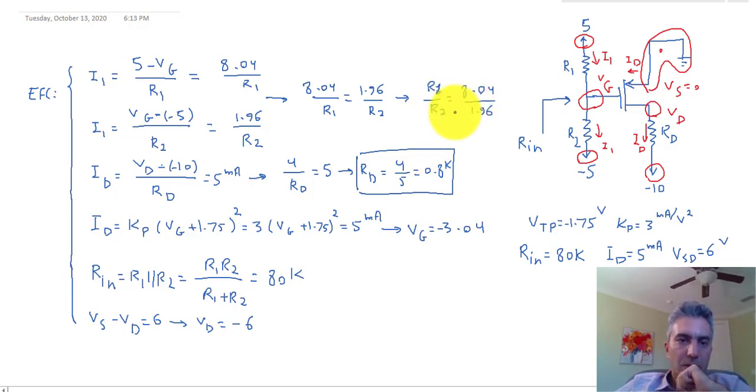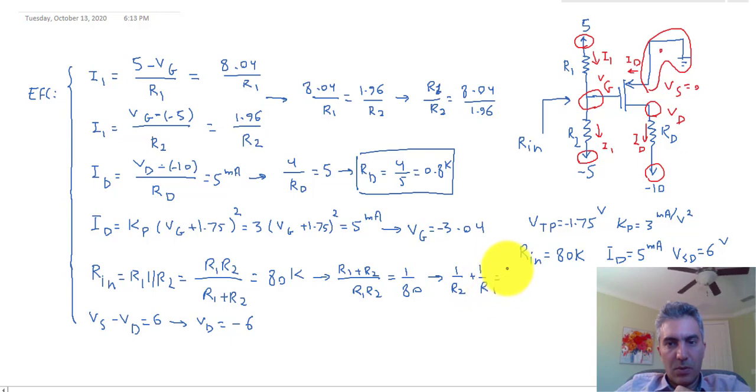And you take this equation and this equation, and from this you know R1 plus R2 over R1 R2 is equal to 1 over 80. That means 1 over R2 plus 1 over R1 is equal to 1 over 80.